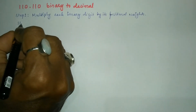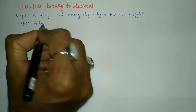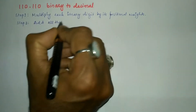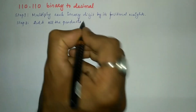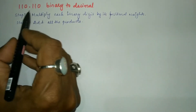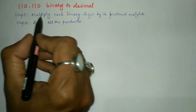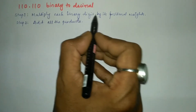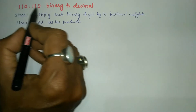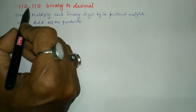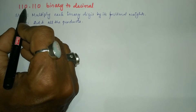Step two says: add all the products. Now let us follow the first step. As per the first step, multiply each binary digit by its positional weight. Here we have been given with the binary fraction, so before the decimal point we have got three digits.